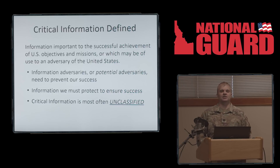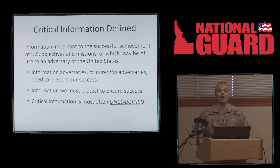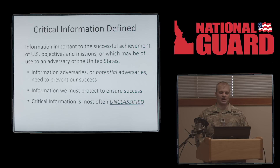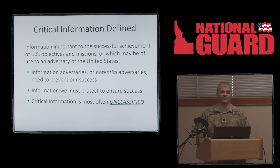Critical information is what develops the critical information list. The Idaho Army National Guard has 10 items we'll talk about later. Critical information for each topic is information important to the successful achievement of U.S. objectives and missions, or which may be used to the adversary of the United States. Essentially, this is information adversaries need to prevent our success, information we must protect to ensure our own success, and critical information is most often unclassified.